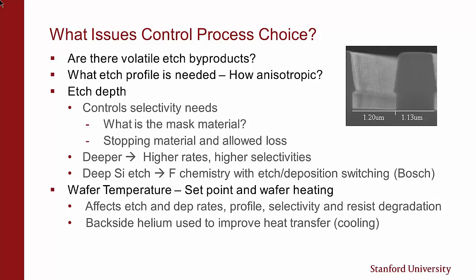In terms of etch temperature, many of our tools have backside helium used to improve the heat transfer between the wafer and the electrode. And finally, we have the issue of initial breakthrough steps. Some processes will begin with a step that will just remove any oxide or polymer before we begin the main process. This is very important when you have a high selectivity process — oxide can slow you down, so you go in and just remove that oxide and then switch to the high selectivity process.